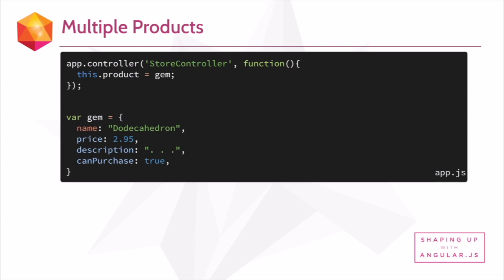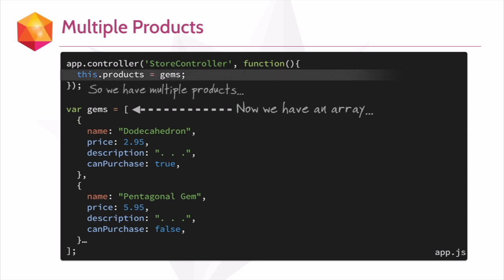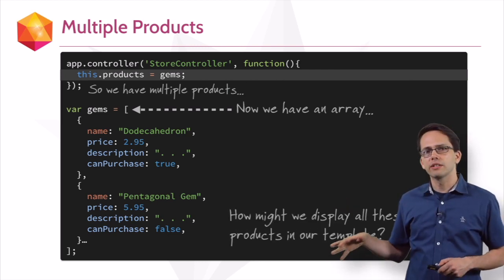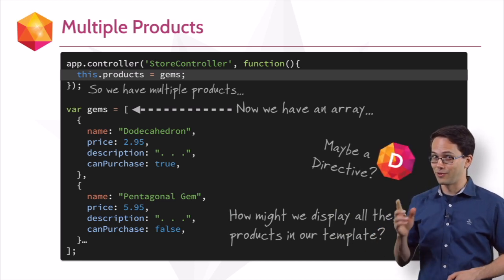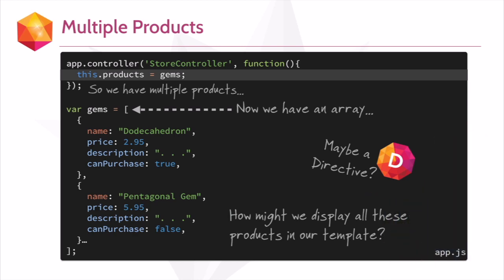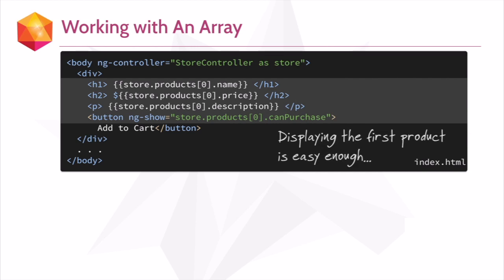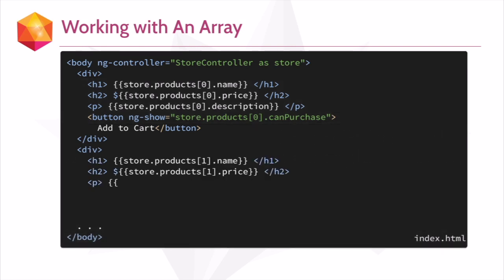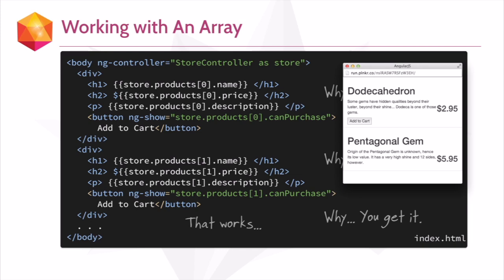What good is a store without multiple products? We only got one. So let's jump back into our app.js and change gem into gems. You'll notice now we have an array with a bracket, and now our products are equal to gems. But how are we going to display all these products inside of our index.html? We can print out each of these products by accessing their array index, but this is not very dynamic. So let's use a directive to iterate through each of the items in the array.